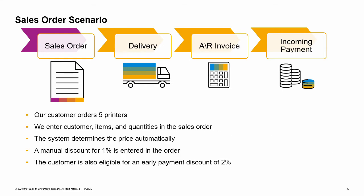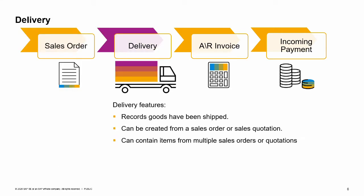Let us imagine that our customer orders five printers. We enter customer, items, and quantities in the sales order. The system determines the price automatically based on the customer's assigned price list. The salesperson offers a discount to the customer, so a manual discount of 1% is entered in the sales order. Based on the payment terms, the customer is also eligible for an early payment discount of 2%.